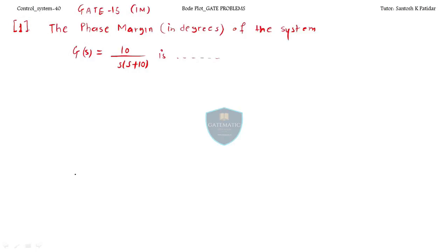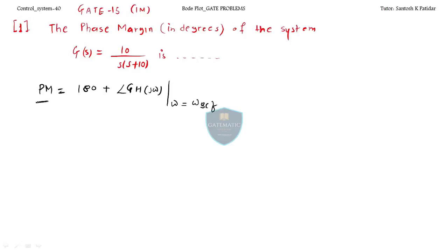The phase margin in degrees of the system — the formula for phase margin is 180 degrees plus angle of GH(jω), where the frequency ω is the gain crossover frequency. We always calculate the phase margin at the gain crossover frequency.